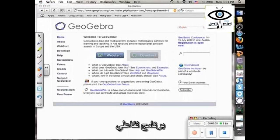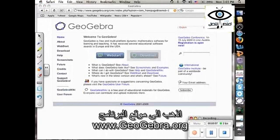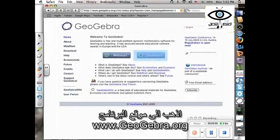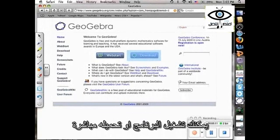GeoGebra is an interactive geometry program that is free to download and use. Go to their website, www.geogebra.org, and you can either click to web start it or to download it.